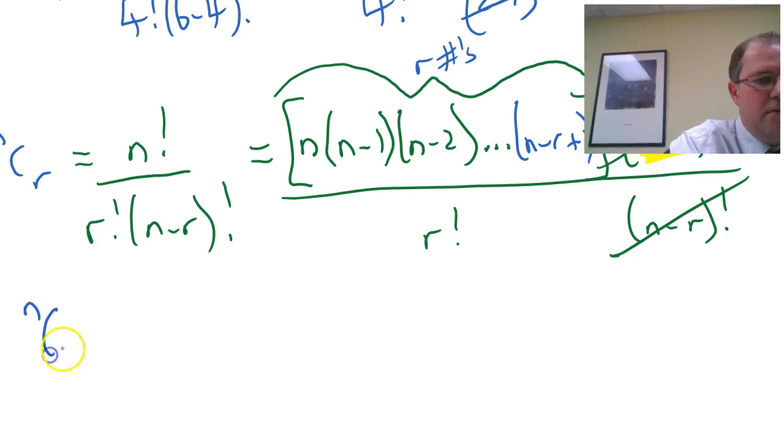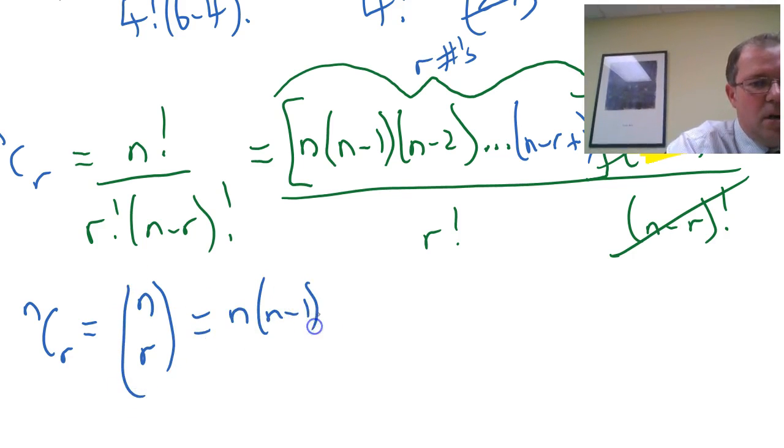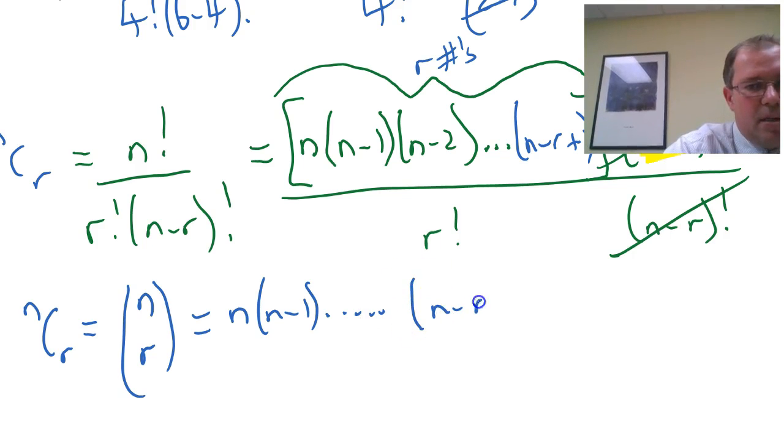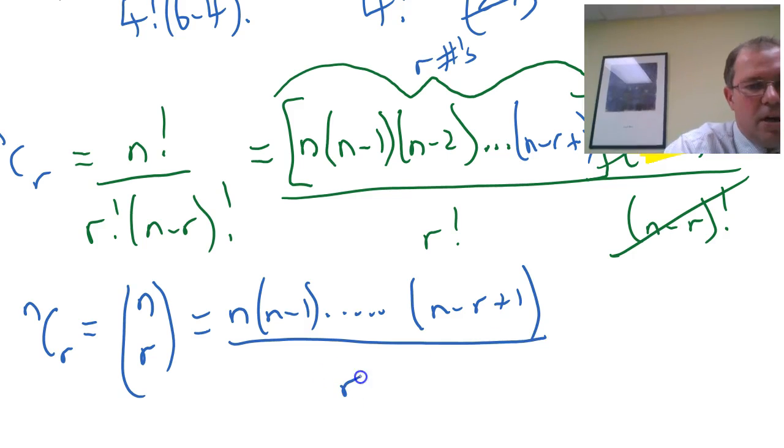And the new formula for n choose r is actually known as nr, which is n times n minus 1, keep going until you've got r numbers on top. n minus r plus 1 would be your last number over r factorial.